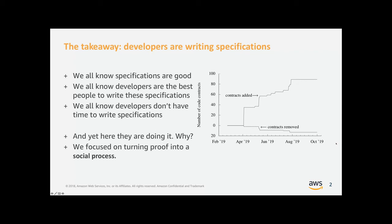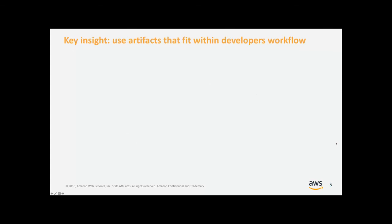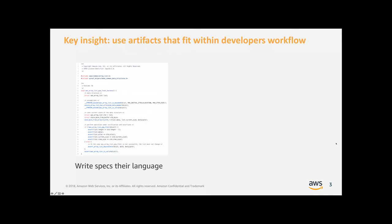Just to give a bit of context: I'm going to be talking about the AWS C Common Library, a C library which underpins a number of our SDKs, and we're talking about verifying safety against undefined behavior such as memory safety. One of our key insights was to use artifacts that fit within the development workflow. When we write a proof, we write a proof harness that looks like a unit test in C. It's written in C, so developers can read it, review it, modify it, and write their own.